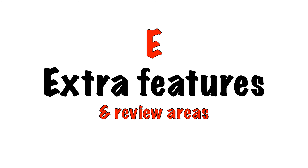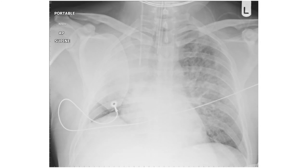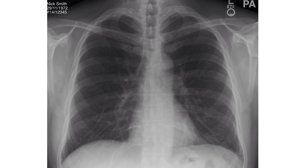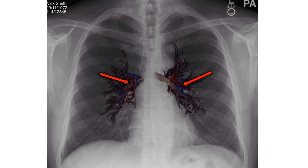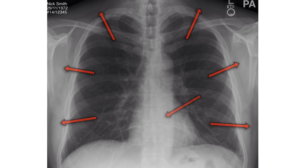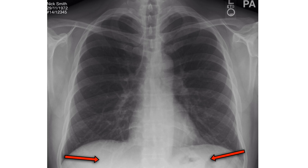E — Extra features and review areas. Look for evidence of medical intervention, for example monitoring equipment, lines and tubes. Are they correctly positioned? If the chest x-ray appears normal so far, pay attention to the review areas: the lung apices, the hilar regions — these are made up of the bronchi and major pulmonary vessels; the left hilum is higher than the right or at the same level, and they should be symmetrical in size and density. Look behind the heart, check the soft tissues, and finally review under the diaphragm.